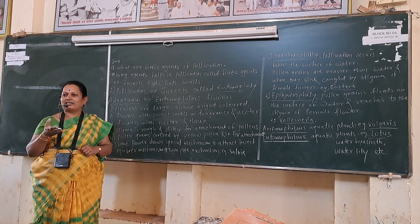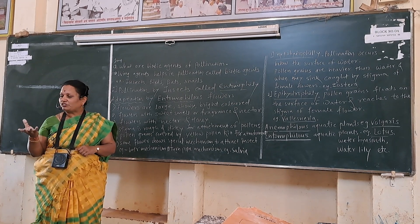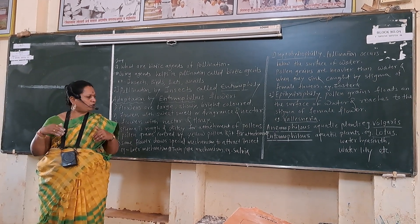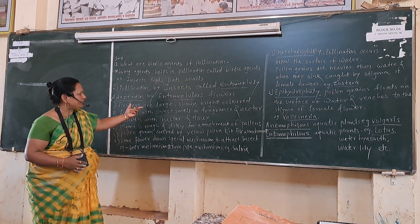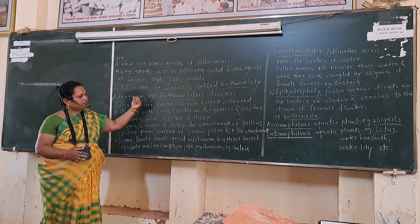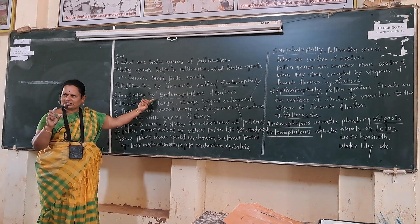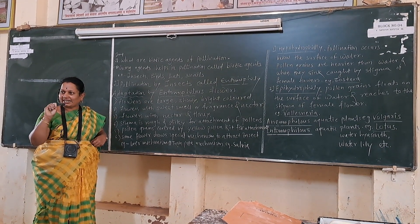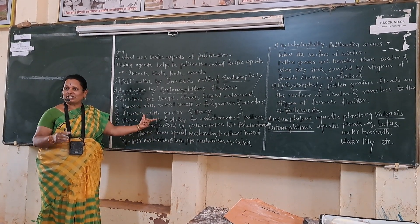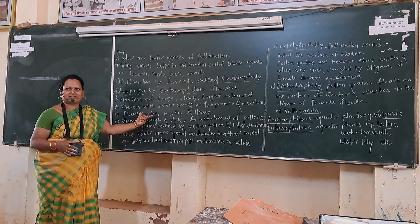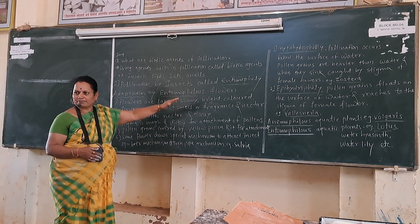Some mechanisms exist in flowers to carry out maximum pollination. To attract insects, flowers produce bright petals, nectar, fragrance, and special mechanisms. These are the adaptations of entomophilous flowers. The transfer of pollen grains with the help of insects is called entomophily, and flowers produce special devices or characteristics to facilitate this transfer.